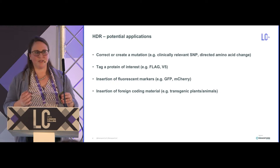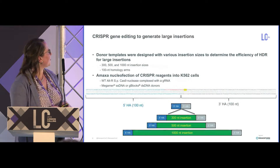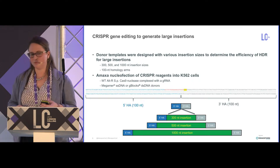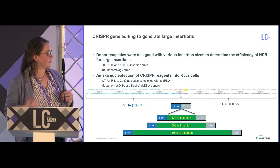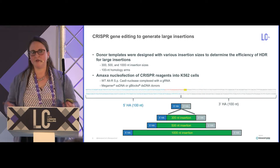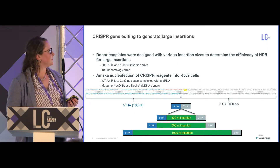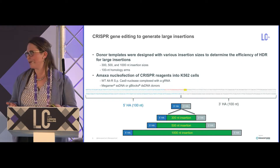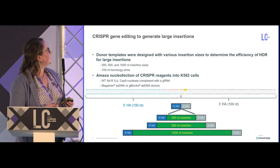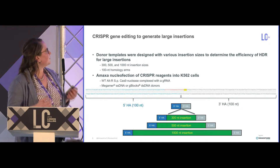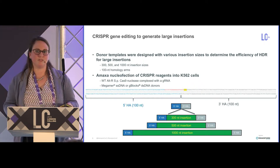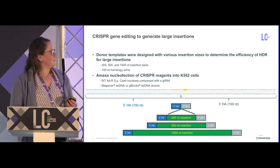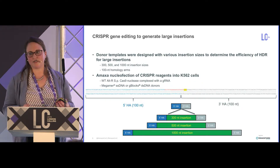Analyzing these results can be challenging. In the experiments shown today, we used single-stranded or double-stranded DNA to mediate various insertion sizes to see how well these go into cells when using CRISPR-Cas9 genome editing. We designed donors with a 300, 500, or 1,000 base insert, using 100 nucleotide homology arms to drive HDR insertion of these sequences.